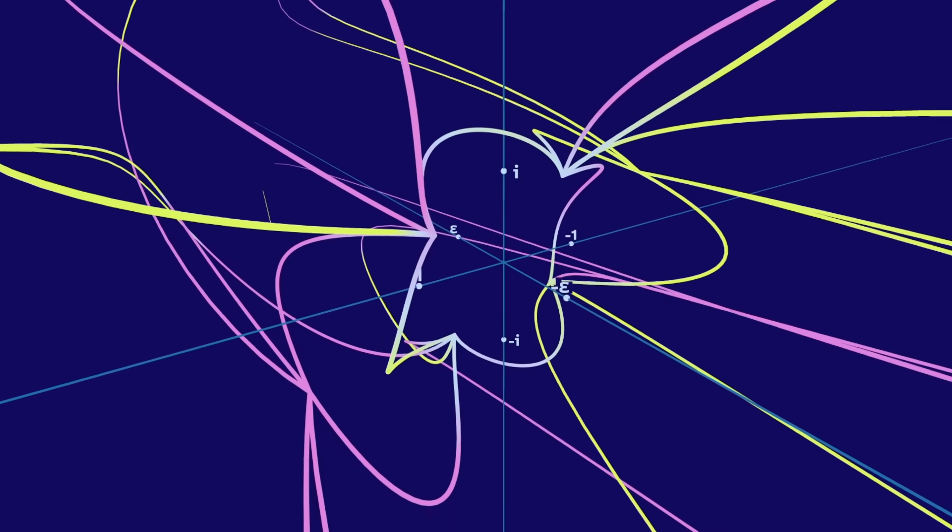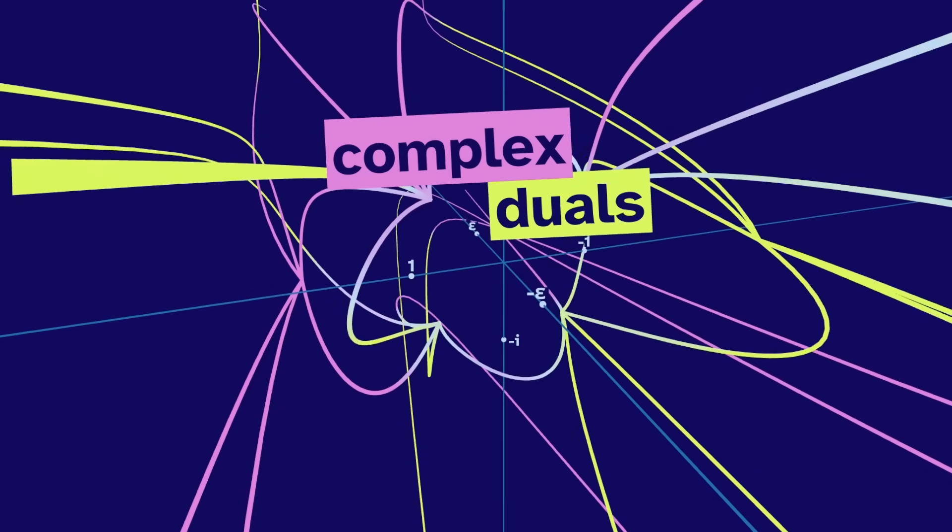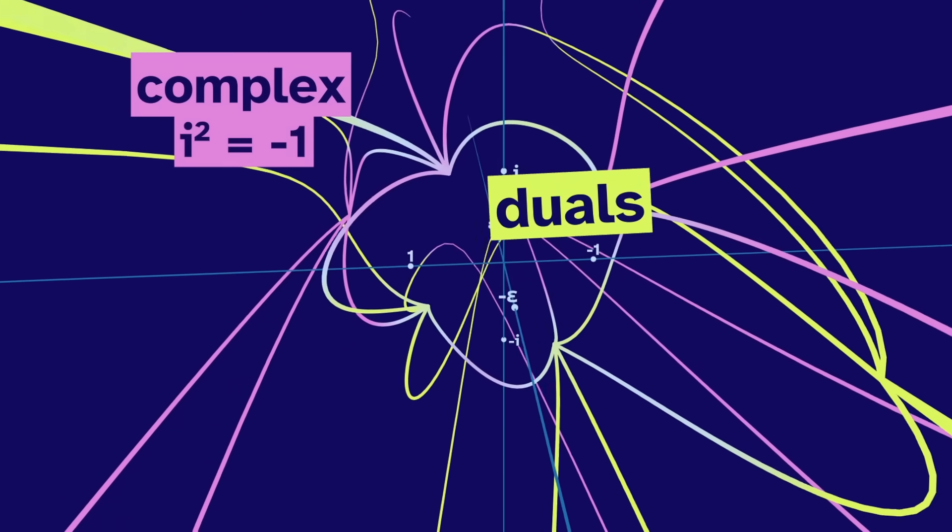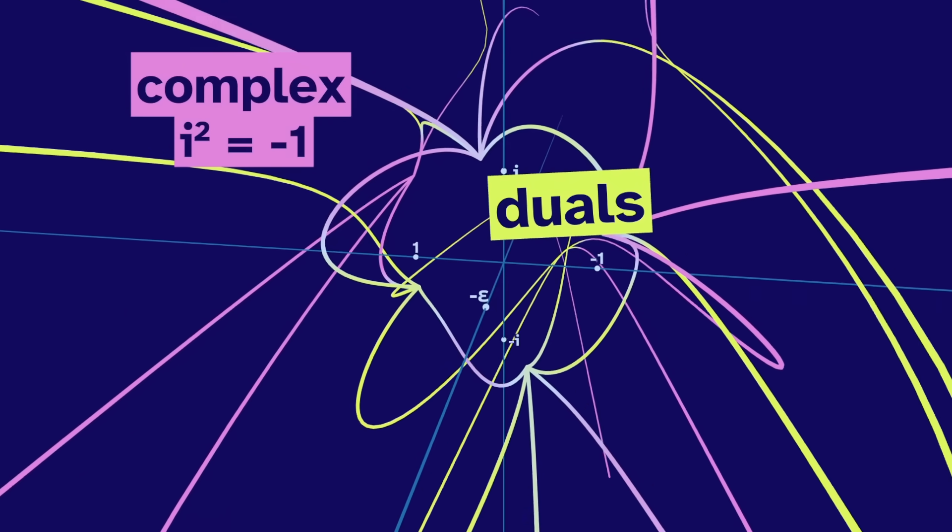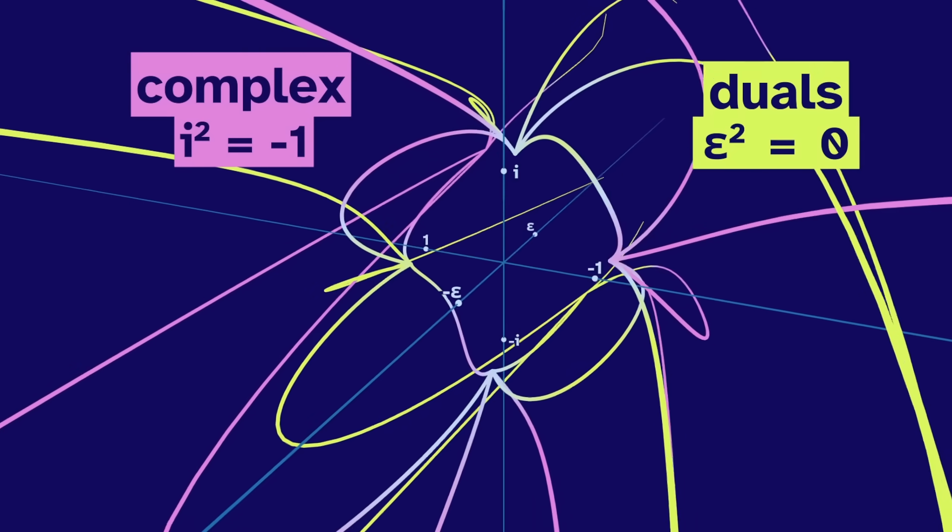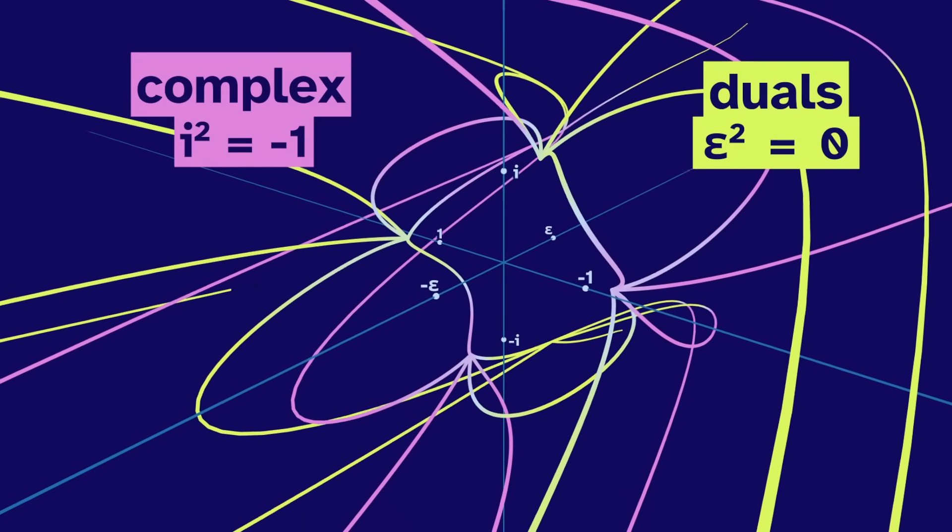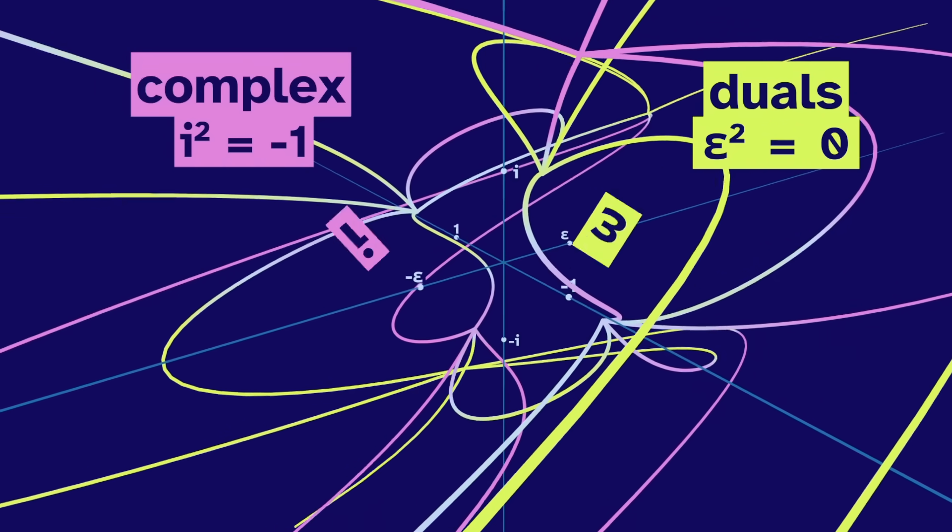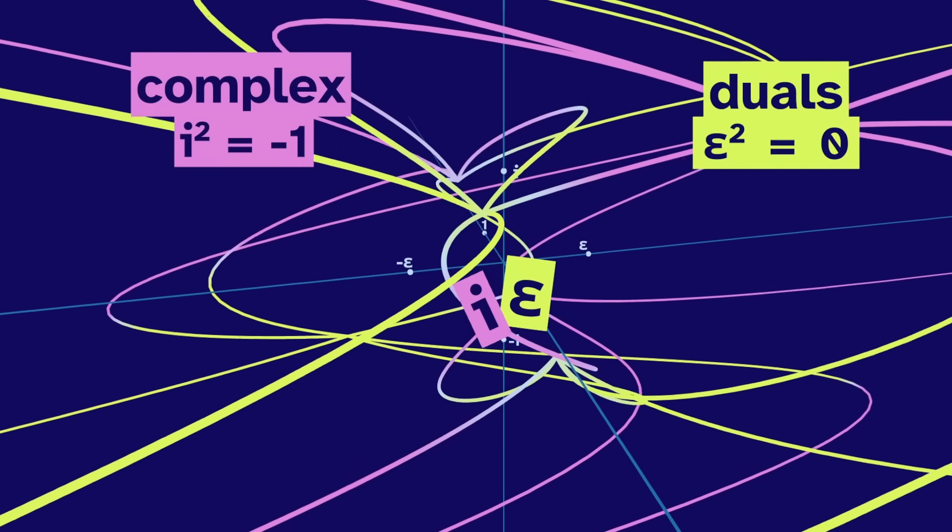This four-dimensional graph uses the complex duals, a combination of the complex numbers, where i squares to negative one, and the duals, where epsilon squares to zero. When i and epsilon interact, we get some weird results.